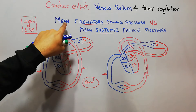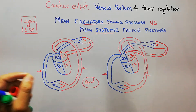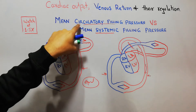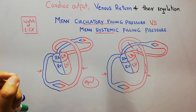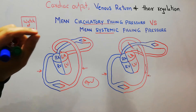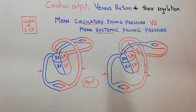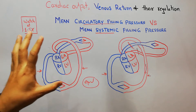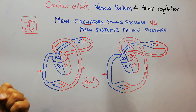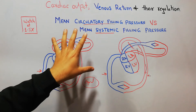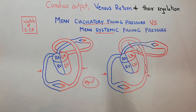Measurement of mean circulatory and mean systemic filling pressures is almost impossible in living human beings. These values have been measured in different experiments on animals, especially dogs. Some conditions — such as fibrillation or the use of a pacemaker where heart pumping can be stopped — may provide opportunities to measure these values, but normally they are impossible to measure in living humans.